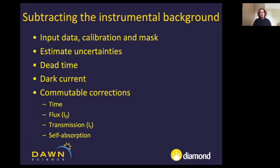Once data is input, the first step is to estimate uncertainties by calculating Poisson statistics on each pixel for photon counting detectors. We then correct for detector dead time using values provided by the detector manufacturer — for us, Dectris. The dark current, a measure of background radiation hitting the detector, is less of a concern for synchrotrons where count rates are high and exposures are short — typically one second or less — but becomes significant for lab instruments measuring for 10 to 40 minutes or even hours.